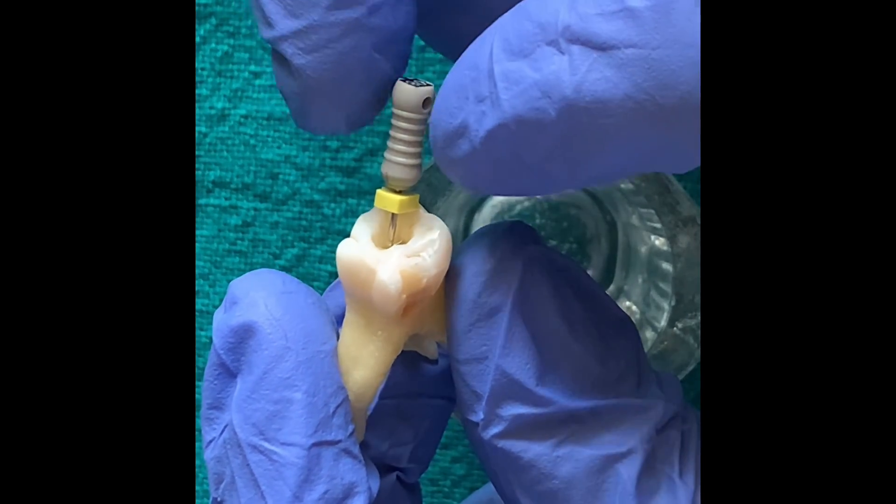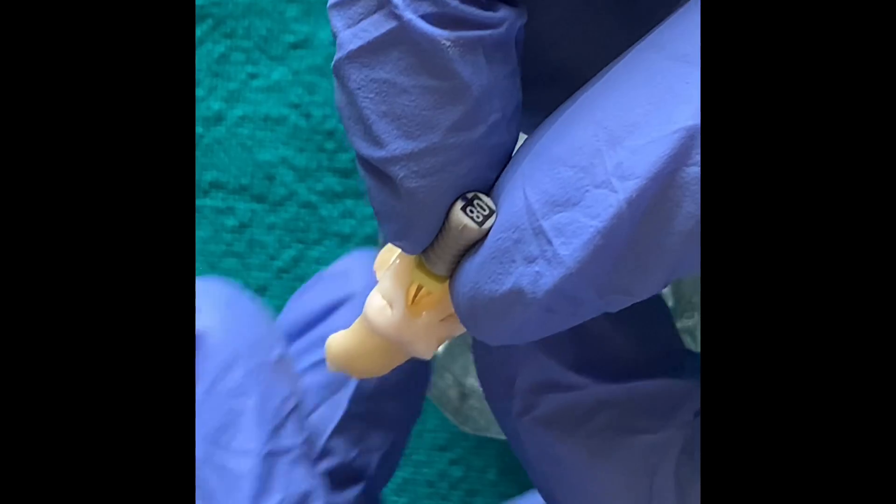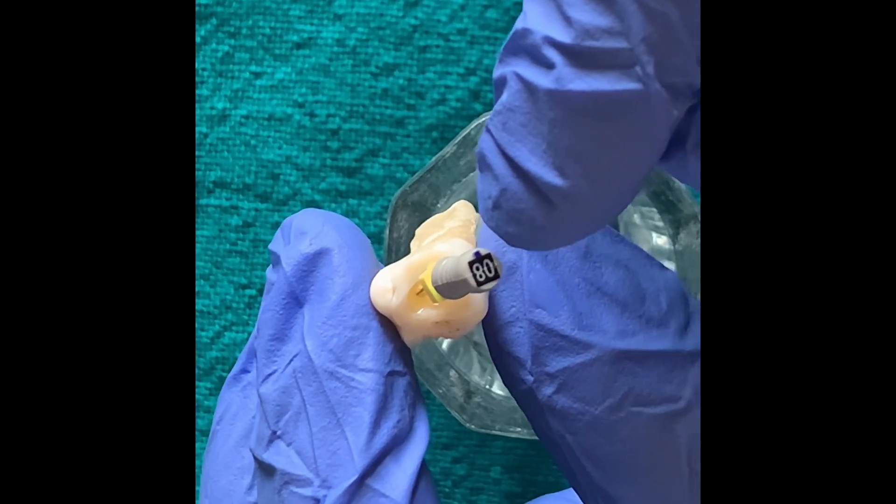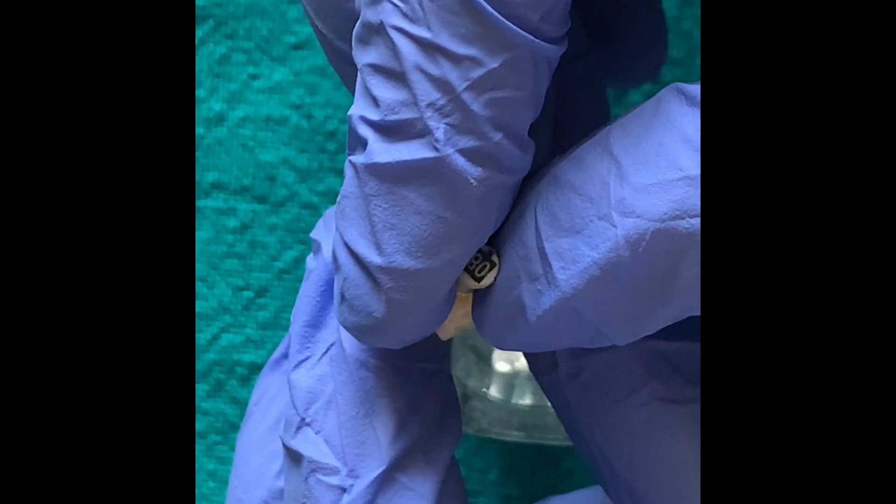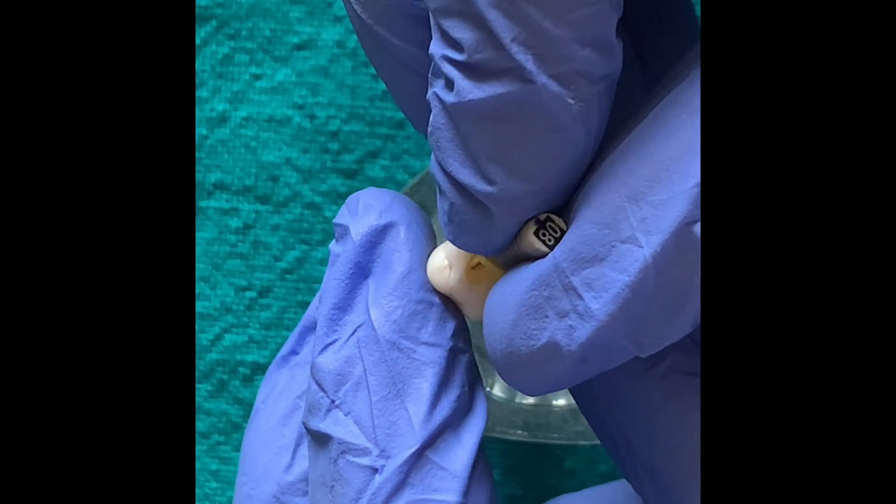Once at the working length, the instrument is rotated clockwise to one full rotation and it is pulled out. This loads the debris on the flutes of the file and removes them.